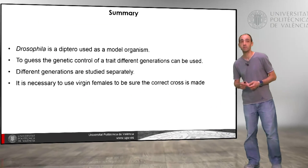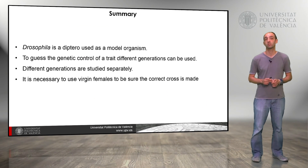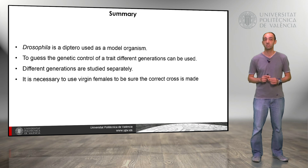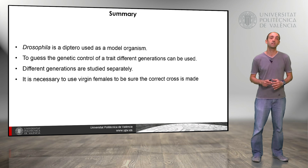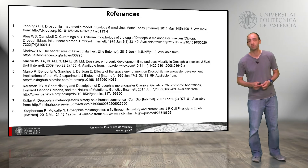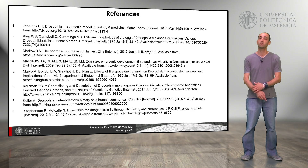In summary, Drosophila is a diptera used as a model organism. To understand the genetic control of a trait, different generations can be used and are normally studied separately. It is necessary to use virgin females to be sure that the correct cross is made. Here we have some references you can use to learn more about this learning object — thank you very much.